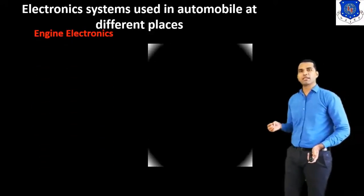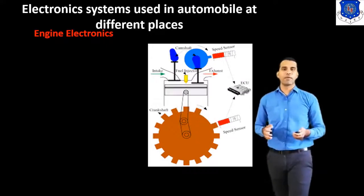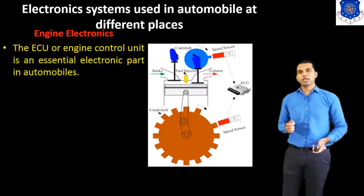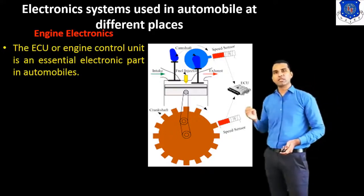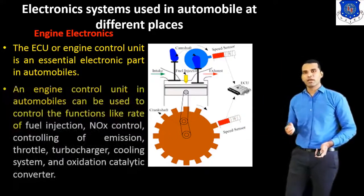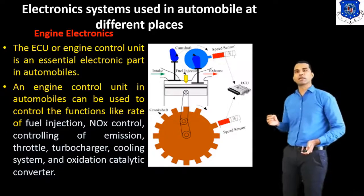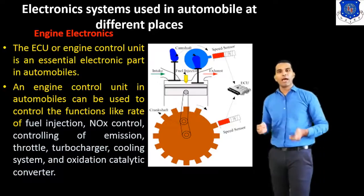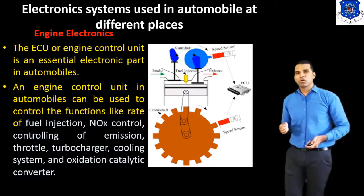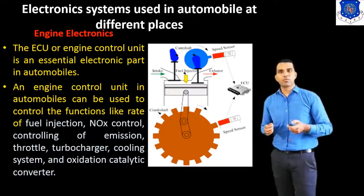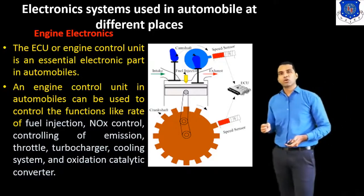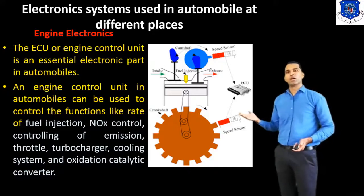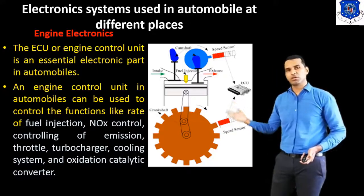First, we start with engine electronics. The ECU — Engine Control Unit — is used to control the engine and is an essential electronic part in the automobile. An Engine Control Unit can be used to control functions like the rate of fuel injection, NOx emission control, throttle position control, turbocharger, cooling system control, and oxidation catalytic converter. So, the engine also uses the electronic system to control all these functions.